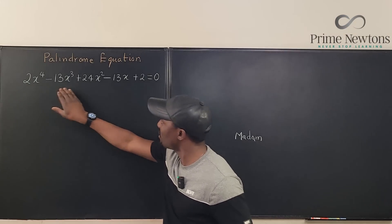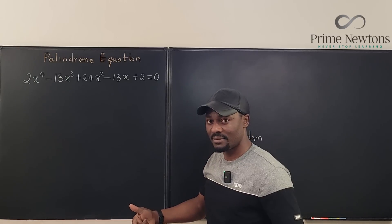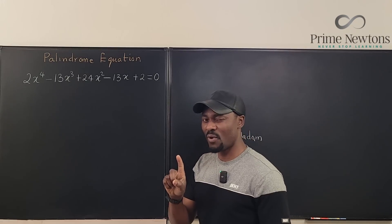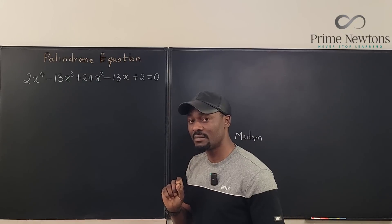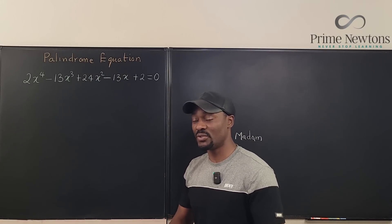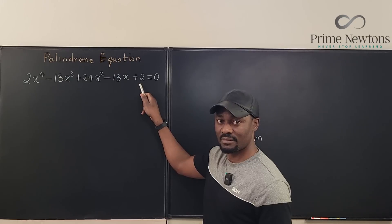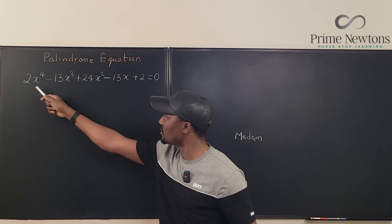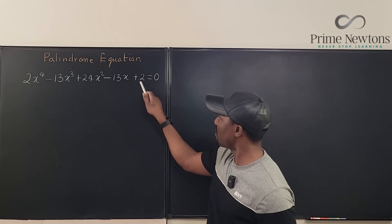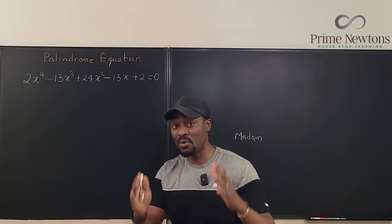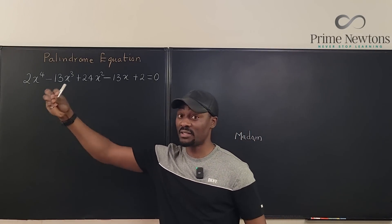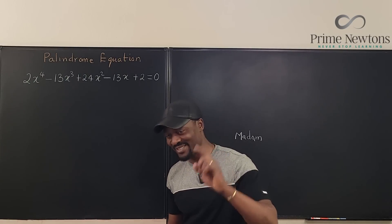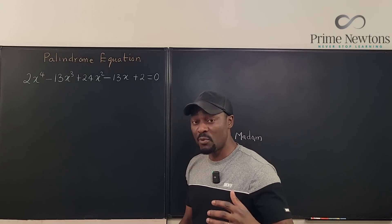Since this is a quartic equation, you're going to divide every single term by x². Now, you might ask: why divide by x²? What if x equals zero? x cannot equal zero for any equation that has a constant term. If x were zero, when you plug it in, you'd get 2 = 0, which doesn't make sense. So for any equation that has a constant term, zero is not one of the roots — as far as real numbers are concerned.